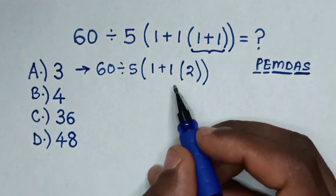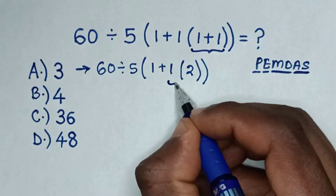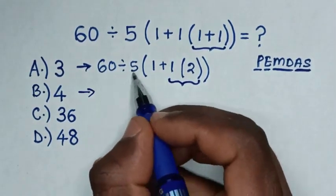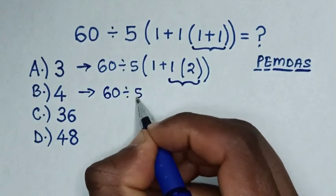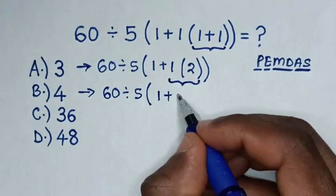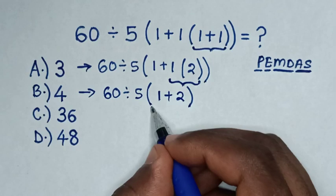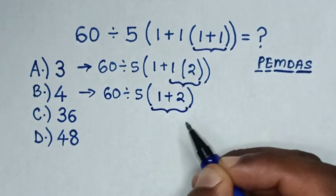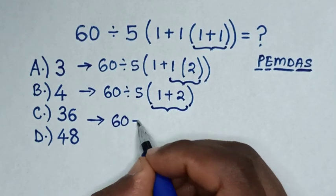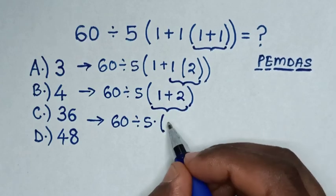Then in the next step, from this outer bracket in here there's multiplication of 1 times 2 to open the bracket. So it will be 60 divided by 5, then bracket 1 plus 1 times 2 is 2, then bracket. 1 plus 2 is 3, bracket.